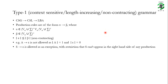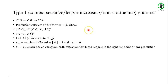Now we have understood why type 1 grammar is called a non-contracting or length increasing grammar — because the left hand side of any production has size less than or equal to the right hand side. But why is it called a context sensitive grammar? To understand that, let's look at an example of a context sensitive sentence.